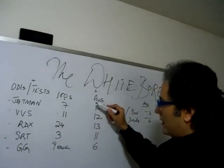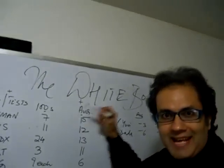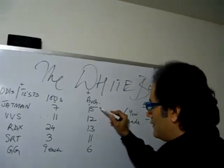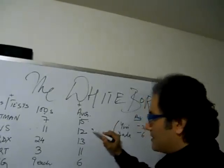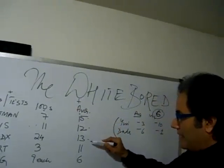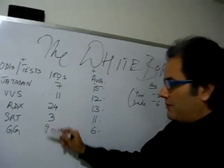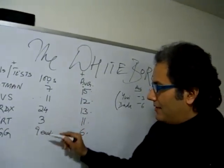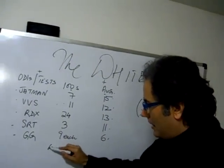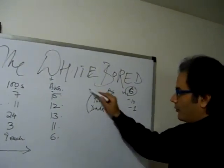Then you look at the averages - the test averages over their one-day averages: 15 plus, 12, 13, 11, 6. All these guys pretty much made their test and one-day debuts around the same time.